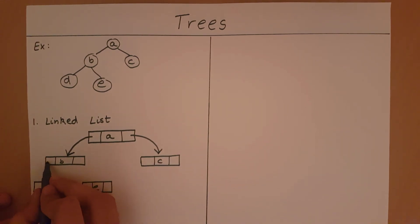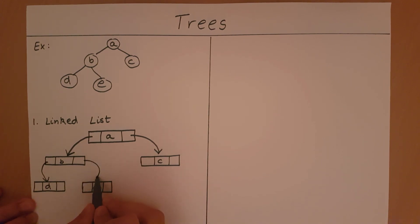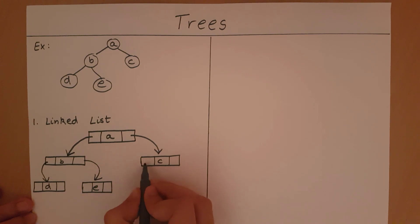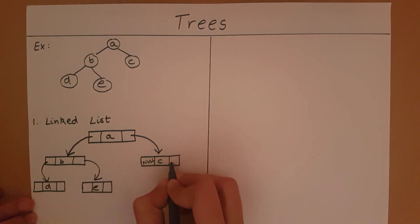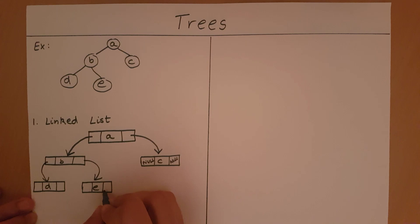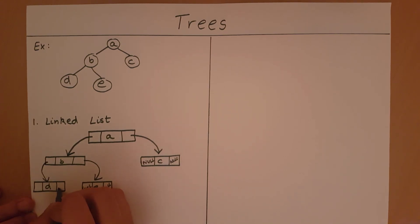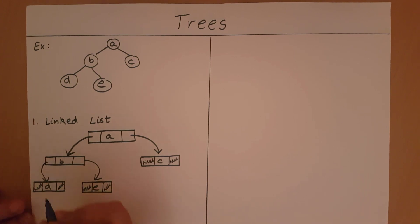To summarize: the left pointer points to the left child and the right pointer points to the right child. When there are no more children, the pointers will have a null value. This is the representation of a tree using a linked list.